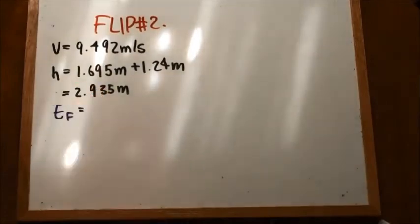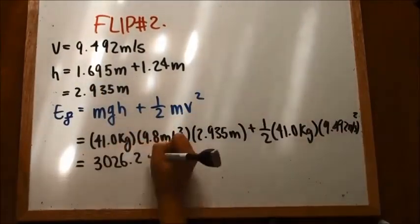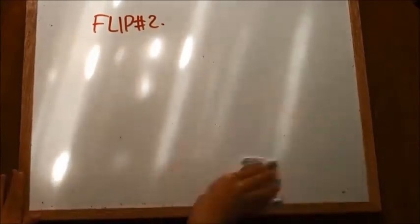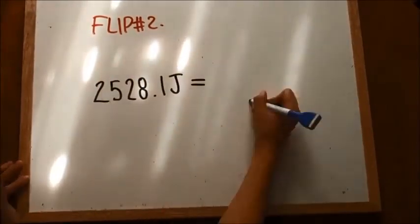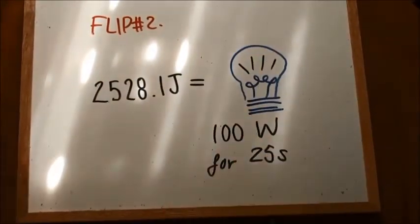For the last back handspring, we can repeat what we did for the first back handspring. This time, she had a higher velocity resulting in more energy. This is equal to lighting one 100 watt light bulb for 25 seconds.